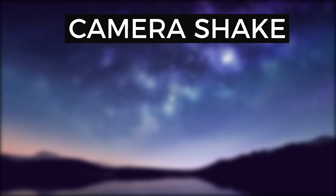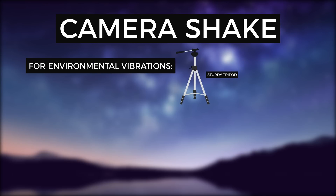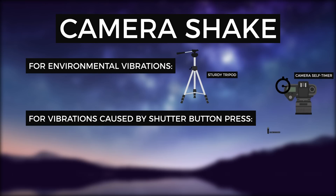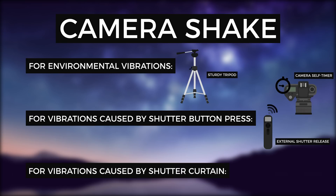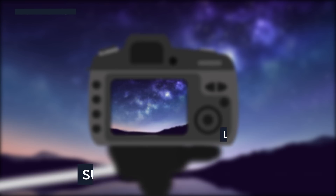Make sure that you're shooting in RAW picture mode, and that you have a sturdy tripod. Use your camera's self-timer or an external shutter release to eliminate any shake from pressing the shutter button. If you have the mirror lock-up feature, enable that to further reduce camera shake. Keeping all these things in mind, you should capture the breathtaking view of the Milky Way. Thank you for watching.